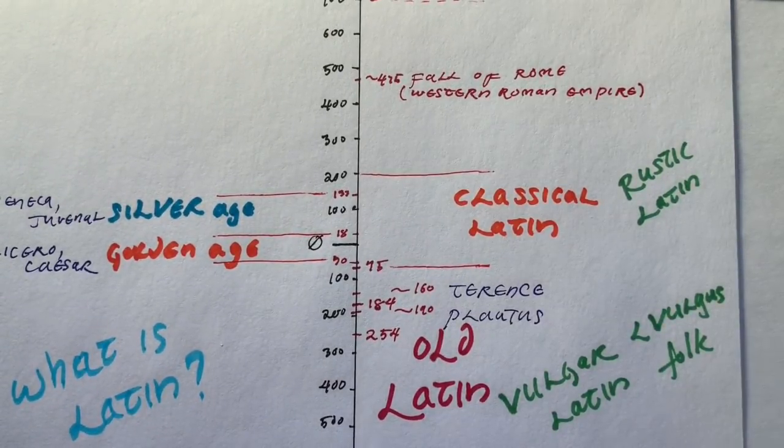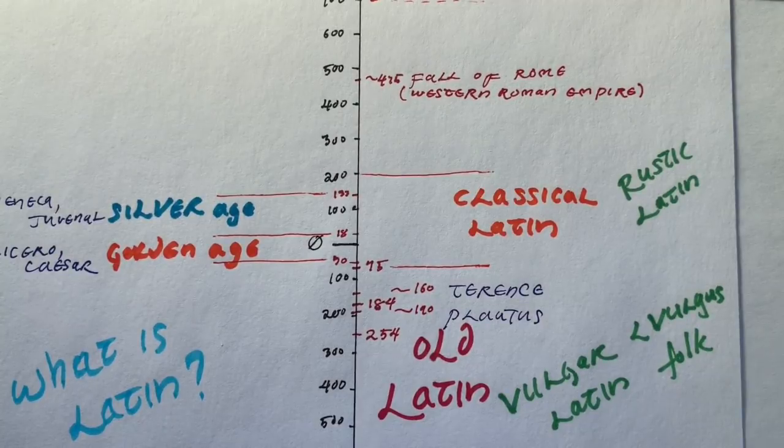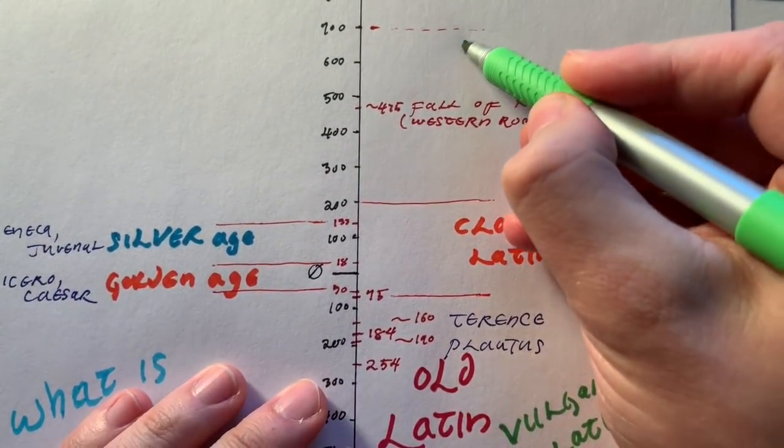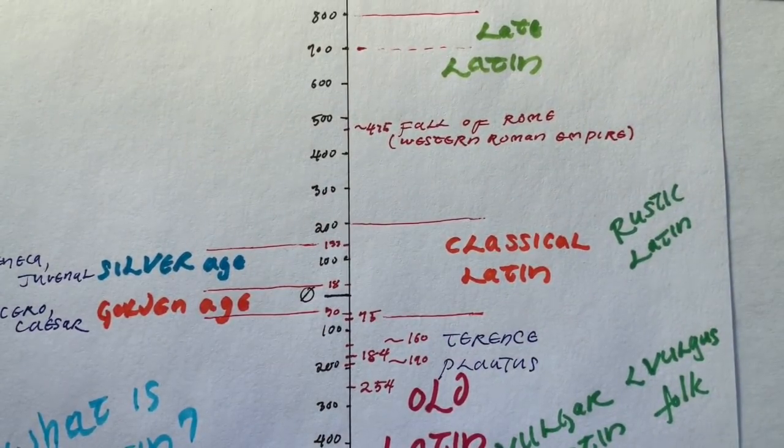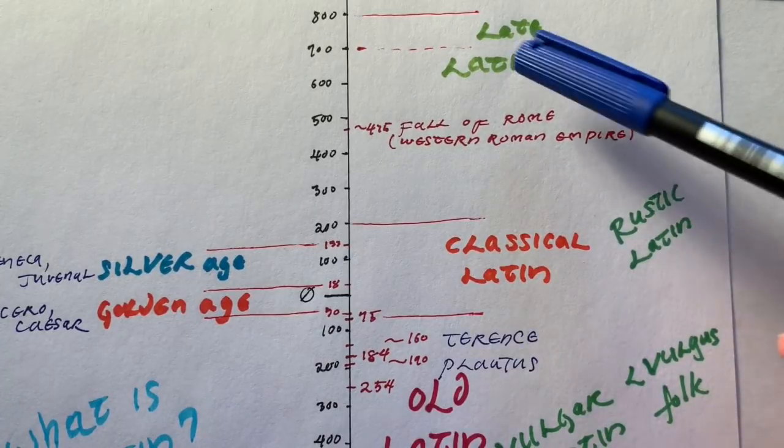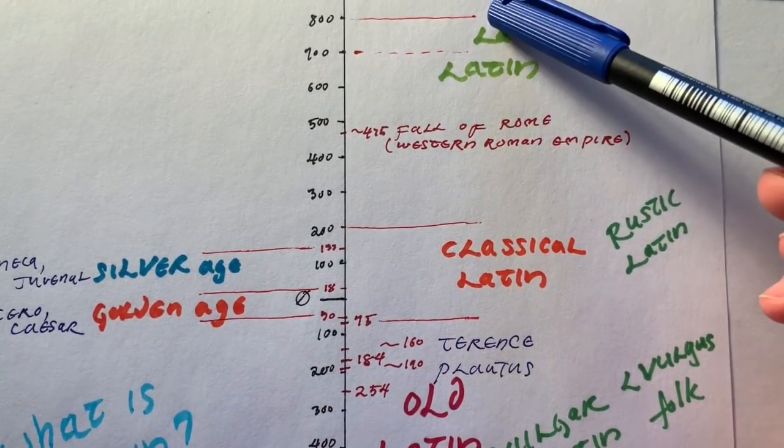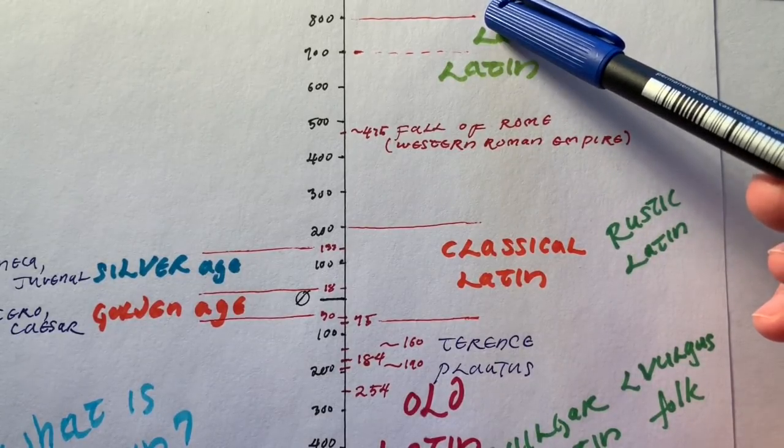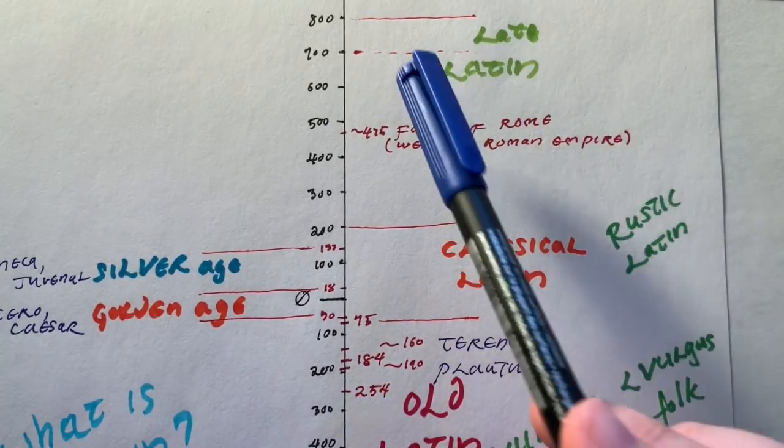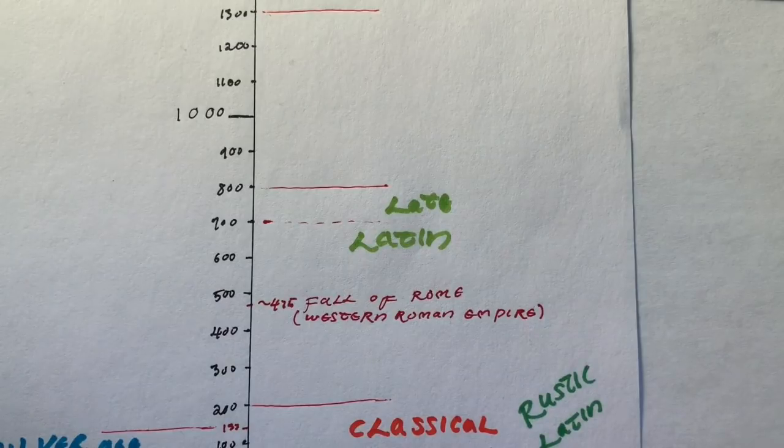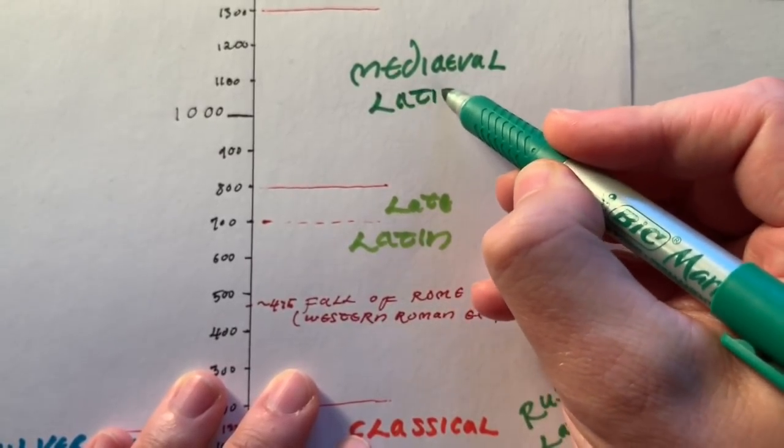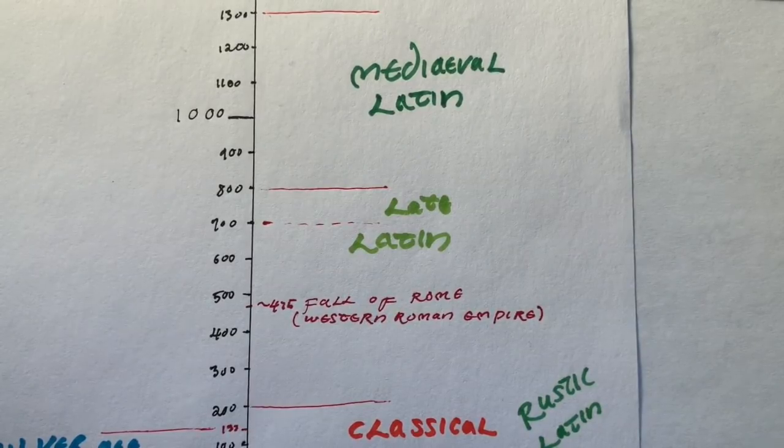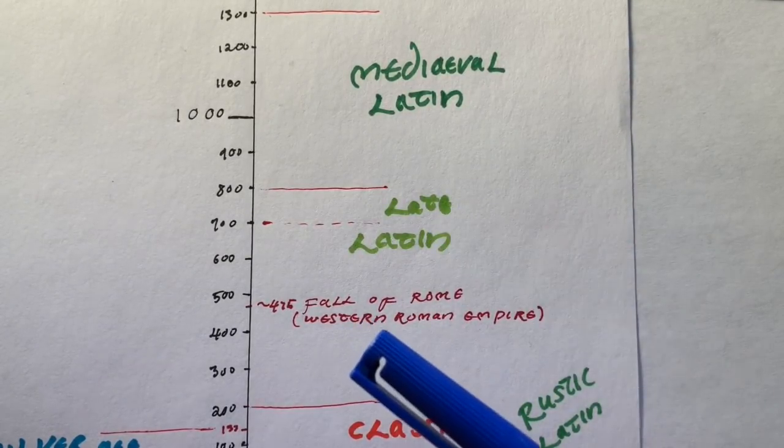After the classical Latin period, the term used is late Latin, which is a reasonably arbitrary term. Late Latin goes until around the end of 700, and then around 800 AD. Apparently in Hispania you have late Latin continuing, but you have medieval Latin which follows in the next period, starting sooner.